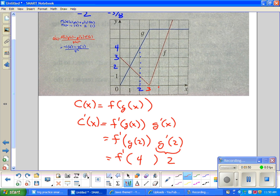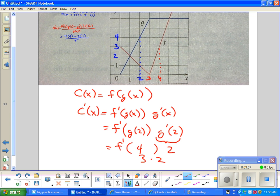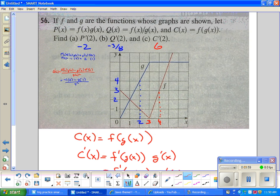If I look at f, 4, 3, 4. What is the slope here? 3. 3. So I get 3 times 2. I think the answer to this one is 6.